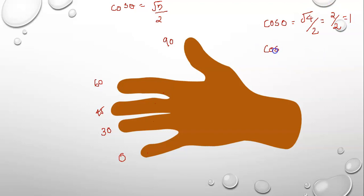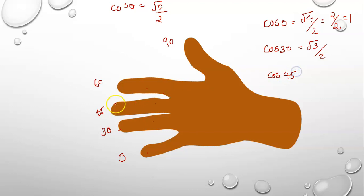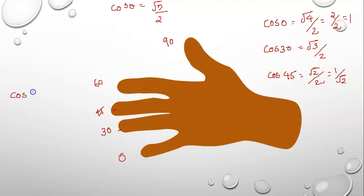Cos 30 — count 1, 2, 3: root 3 by 2. Cos 45 — count 1, 2: root 2 by 2, which is equal to 1 by root 2. Cos 60 is equal to 1.